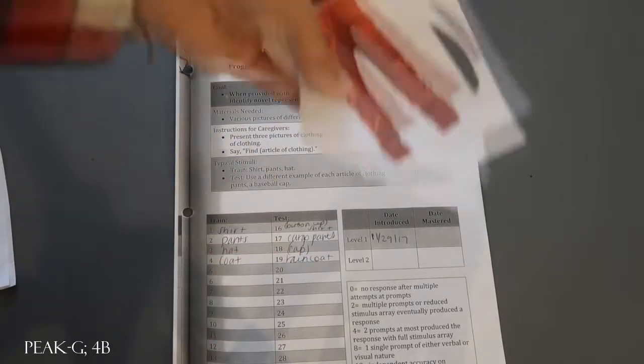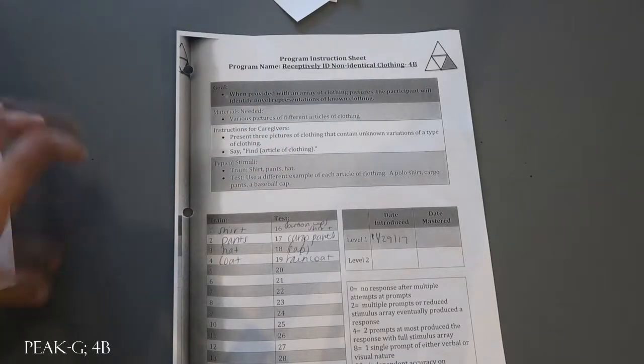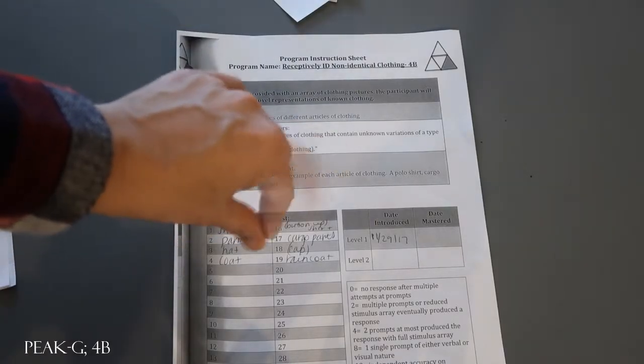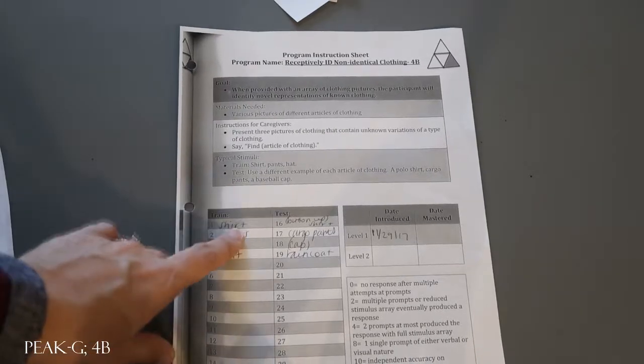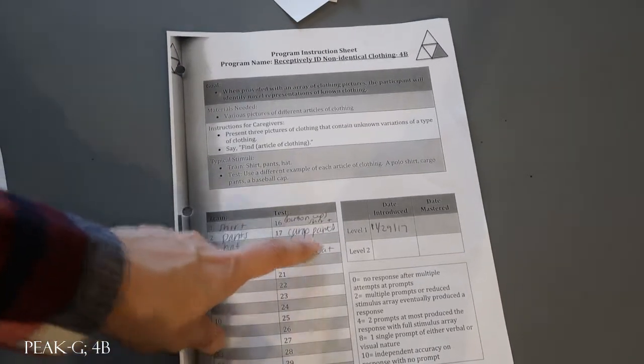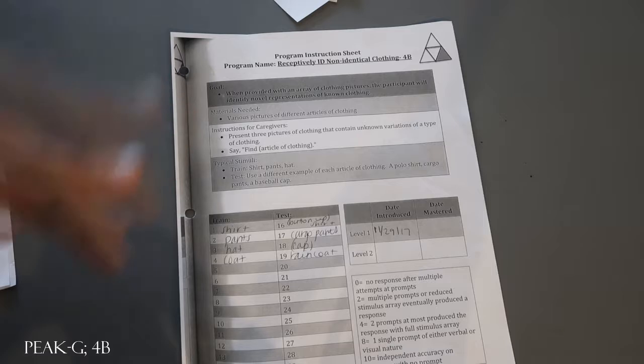When you're targeting a test stimuli only put the test stimuli out in the field. So I would not intermix the materials themselves but you're going to intermix the classes. So you might do shirt first, then do cargo pants, then go back over to pants, etc.